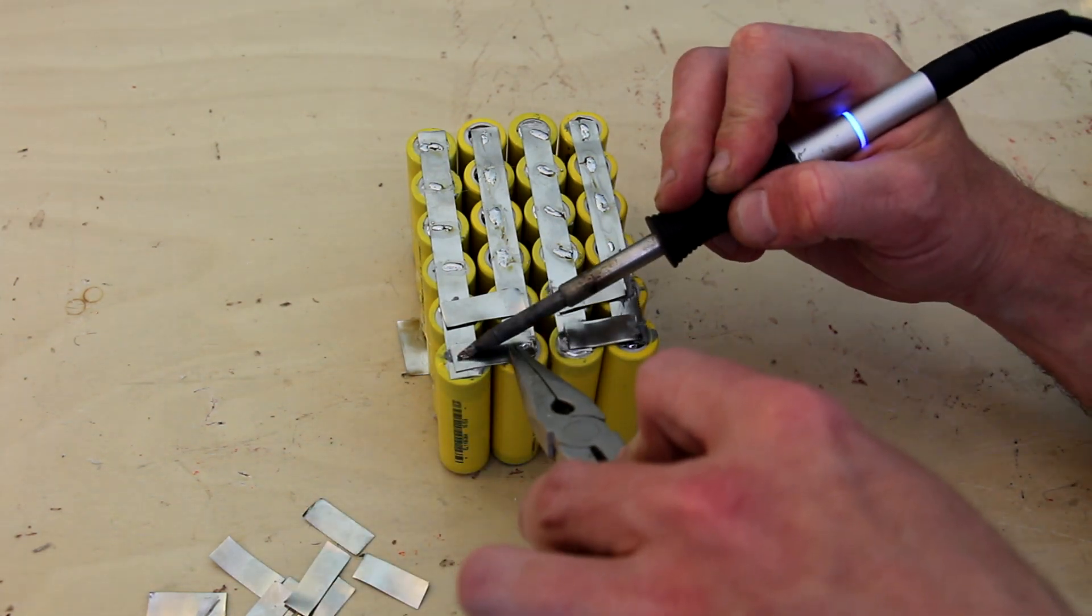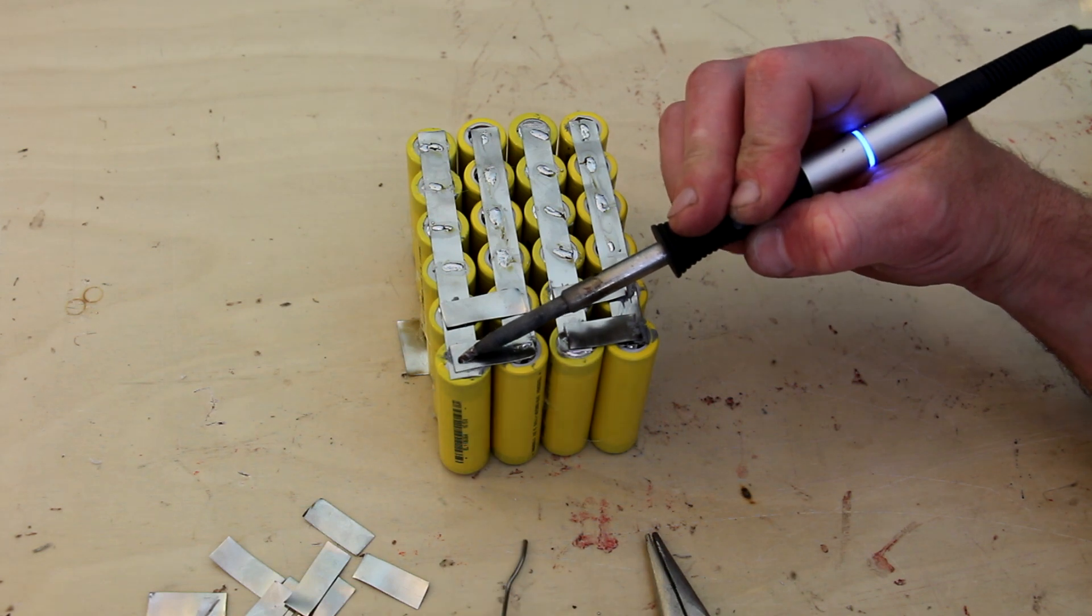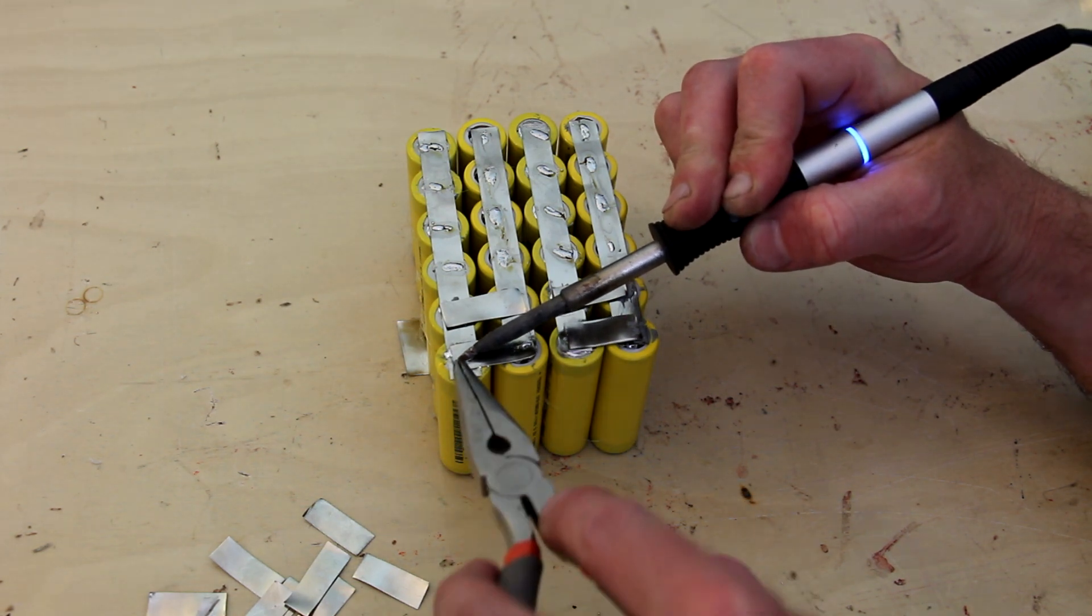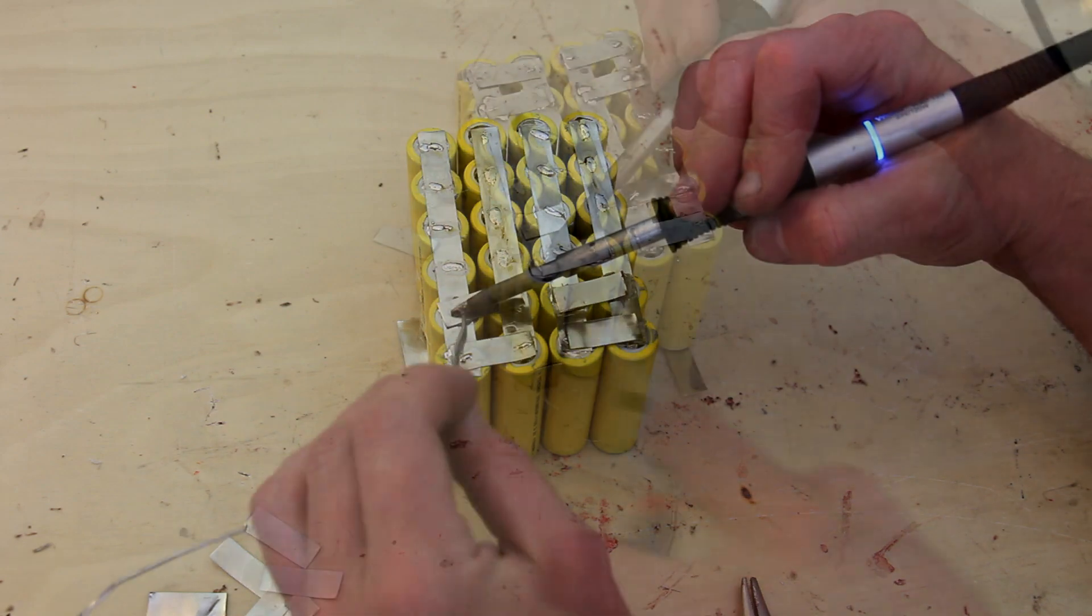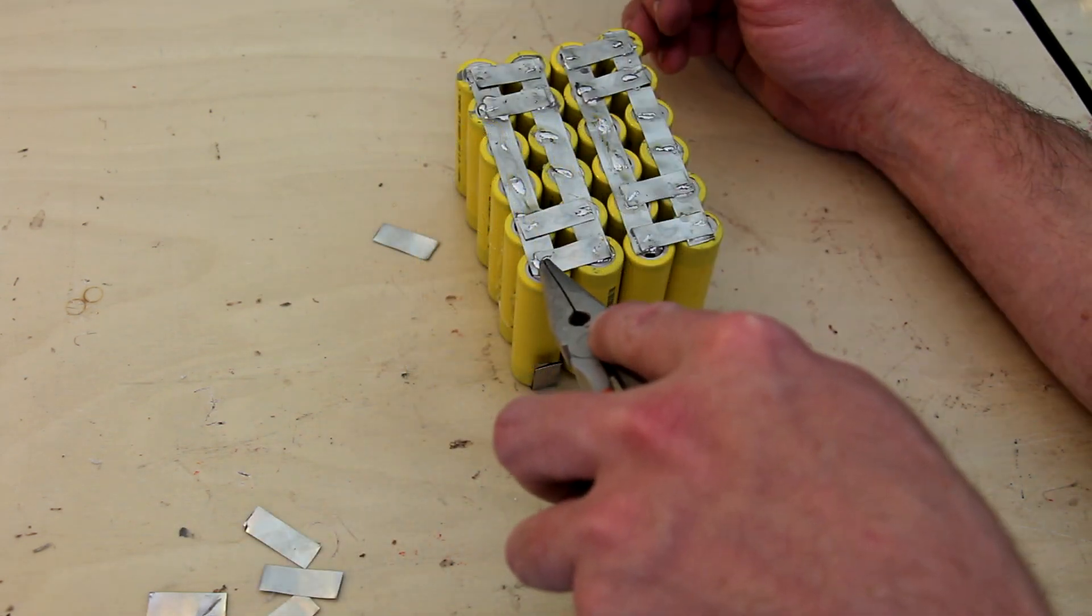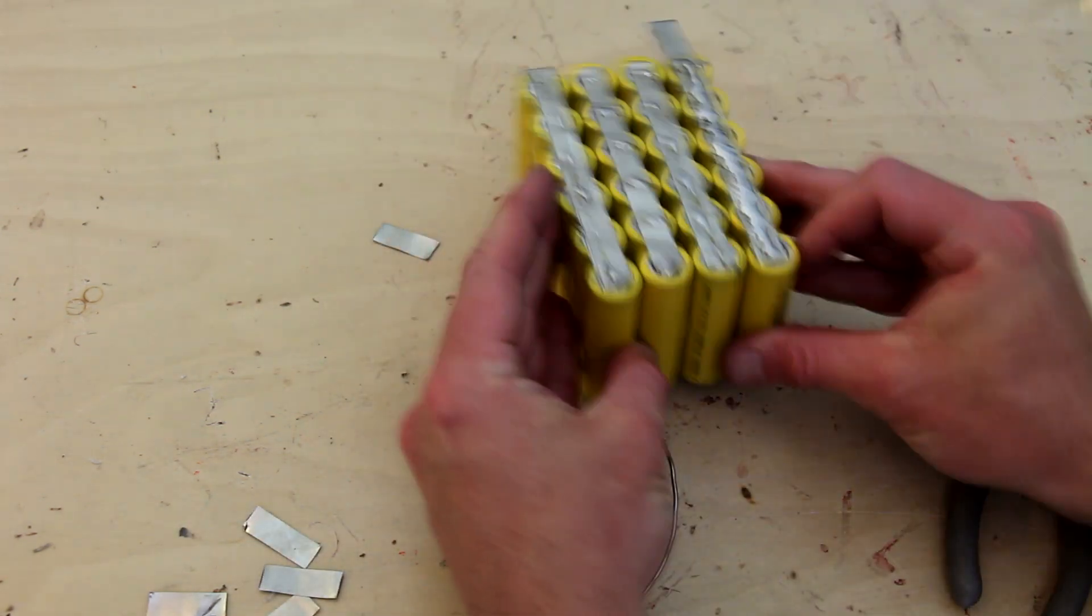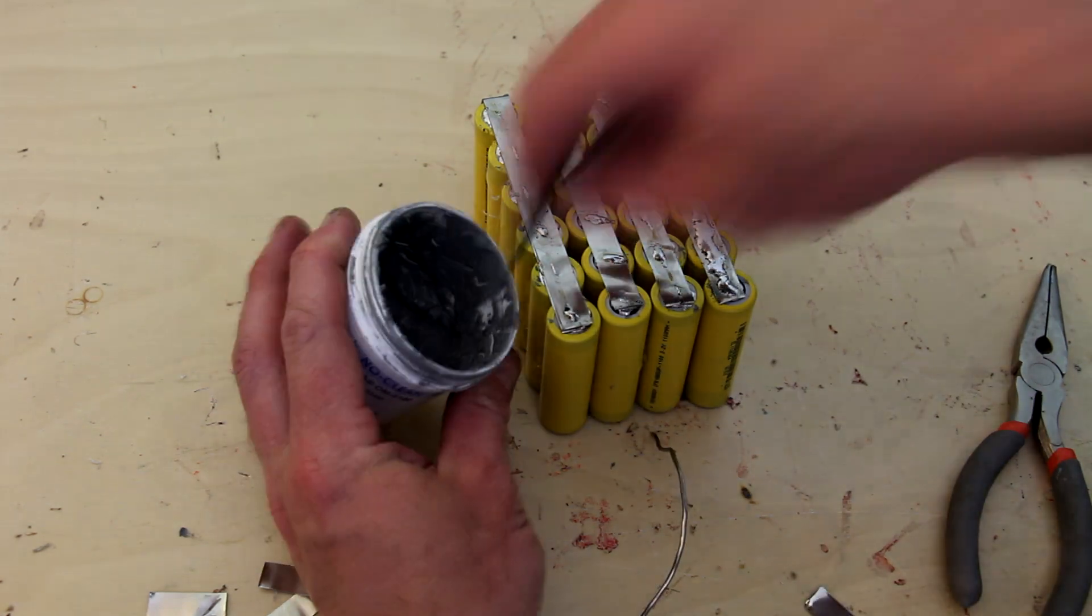You'll note here that I'm not bridging the middle set of cells but the outer two sets of cells. The middle set will be bridged on the other side. Once one side of the battery has the cells adequately bridged, flip it over and then connect the center strips.